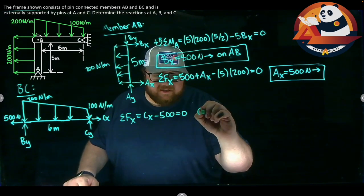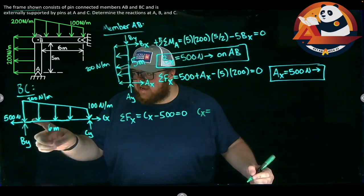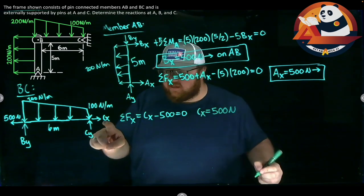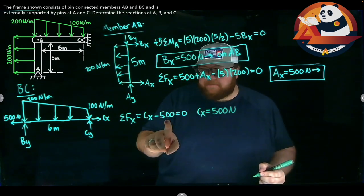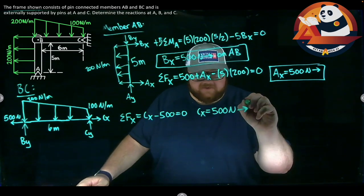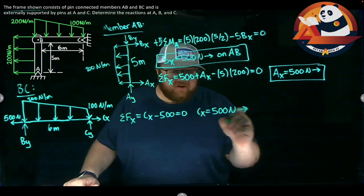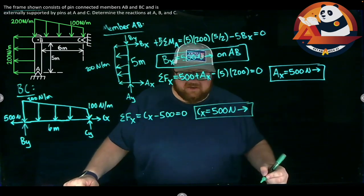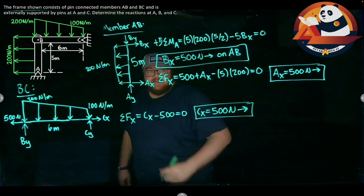That would give me that CX is 500 newtons. It's going to the right. I get a positive, which means I guess the right direction. It is going to the right. That's an external reaction, so I don't have to say on a specific member because we don't change those directions around. That would be another answer for us.